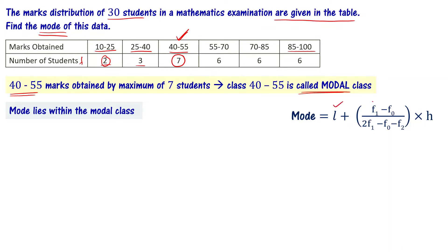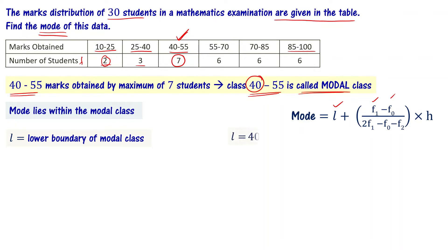Let me explain the key terms in this formula. L is the lower boundary of the modal class. The modal class is 40 to 55, so the lower boundary is 40. Therefore, L = 40.